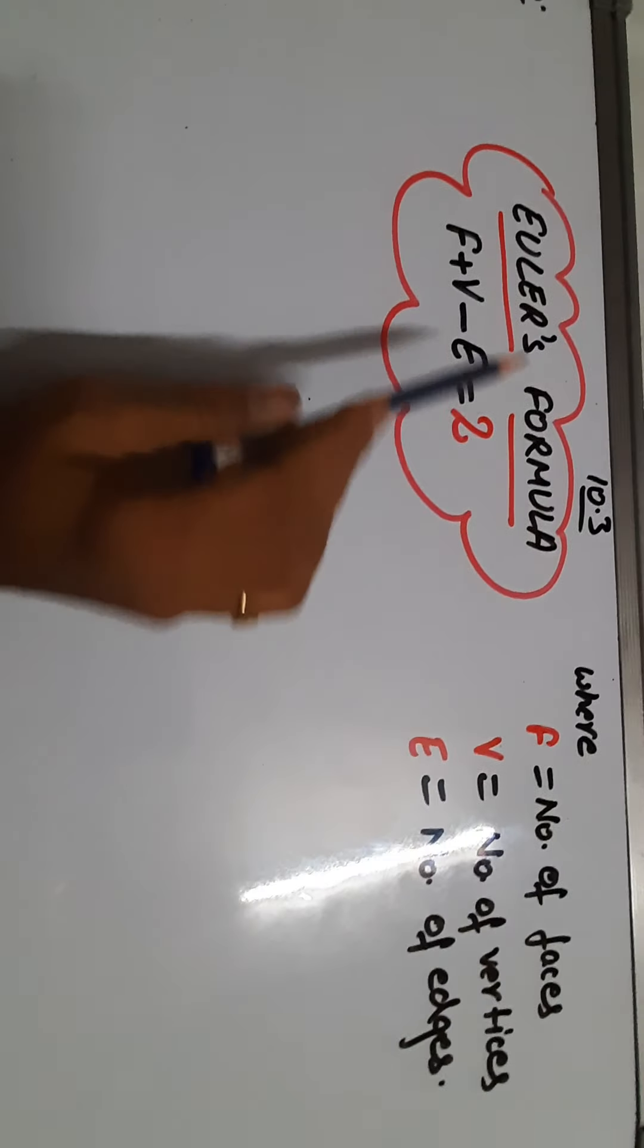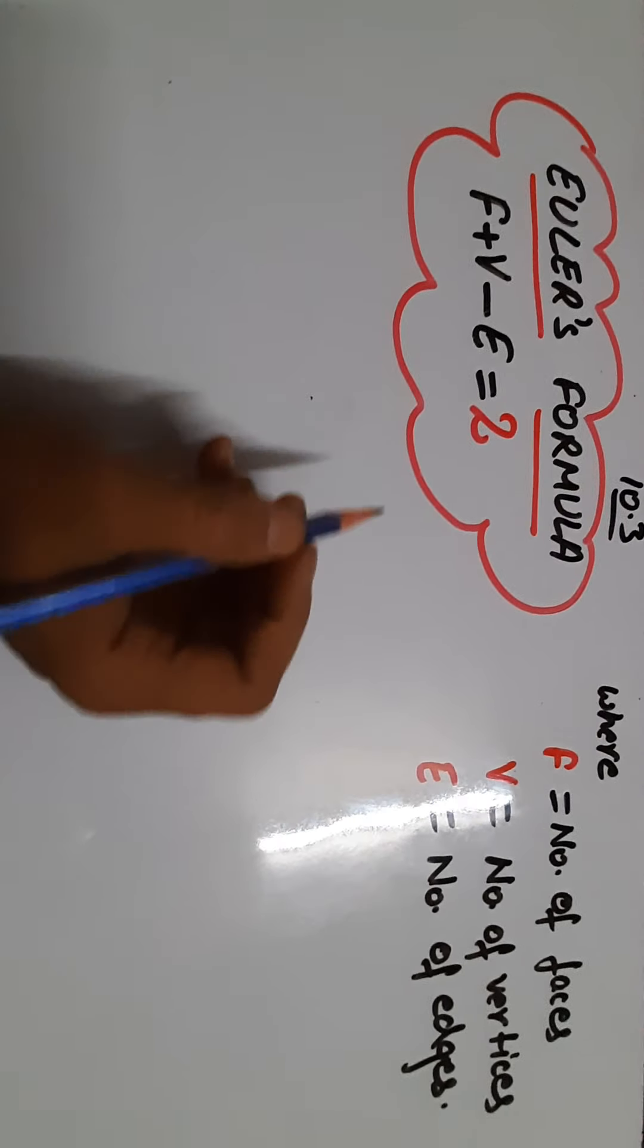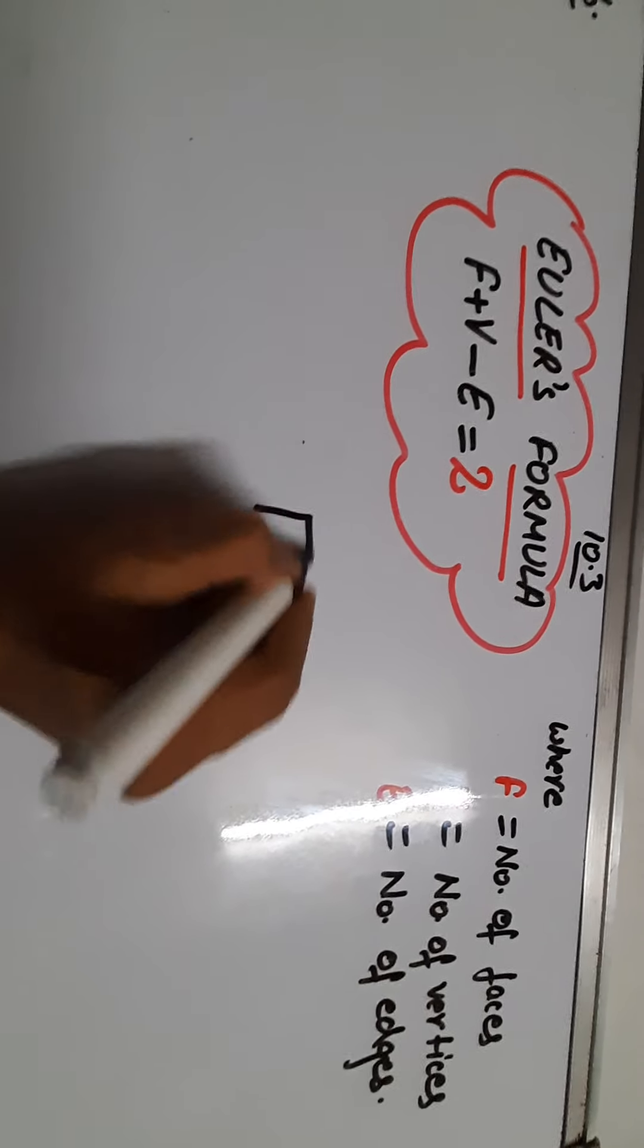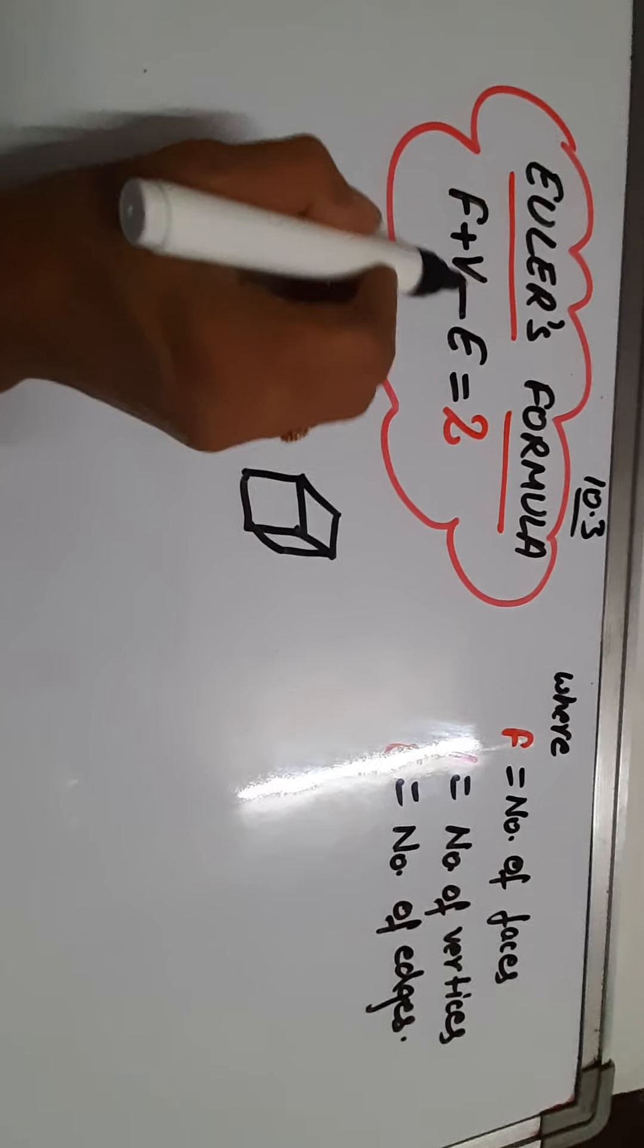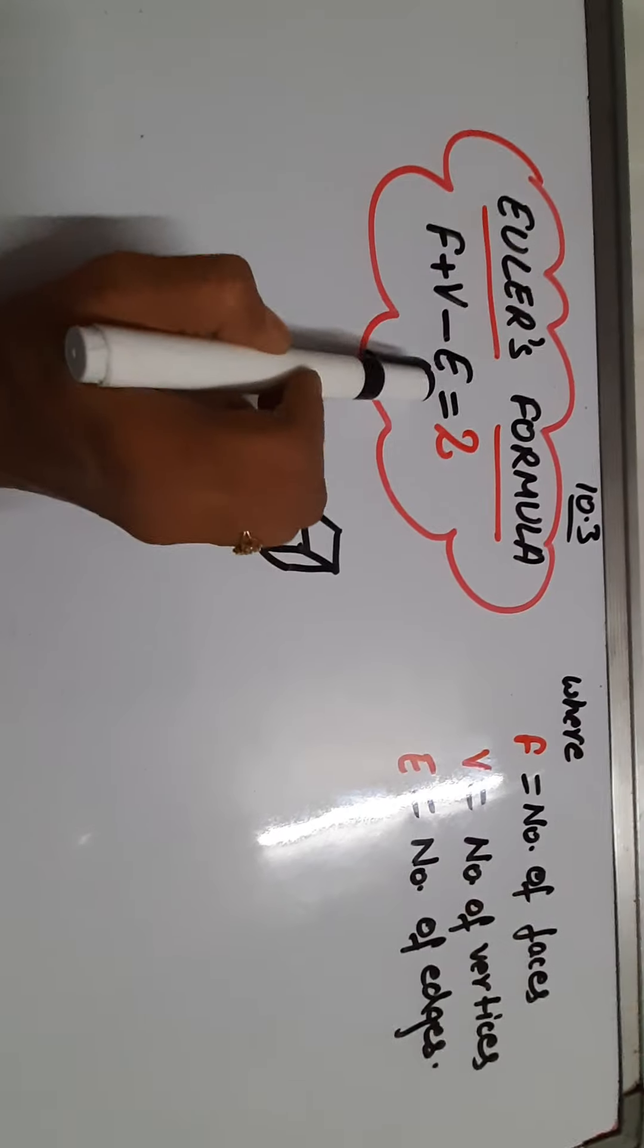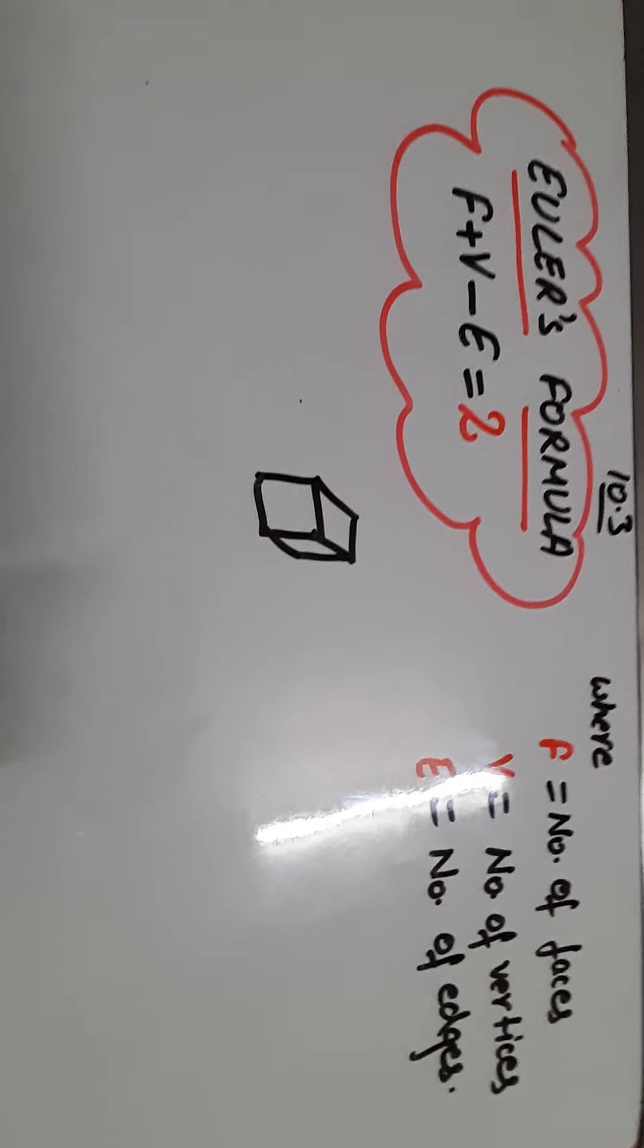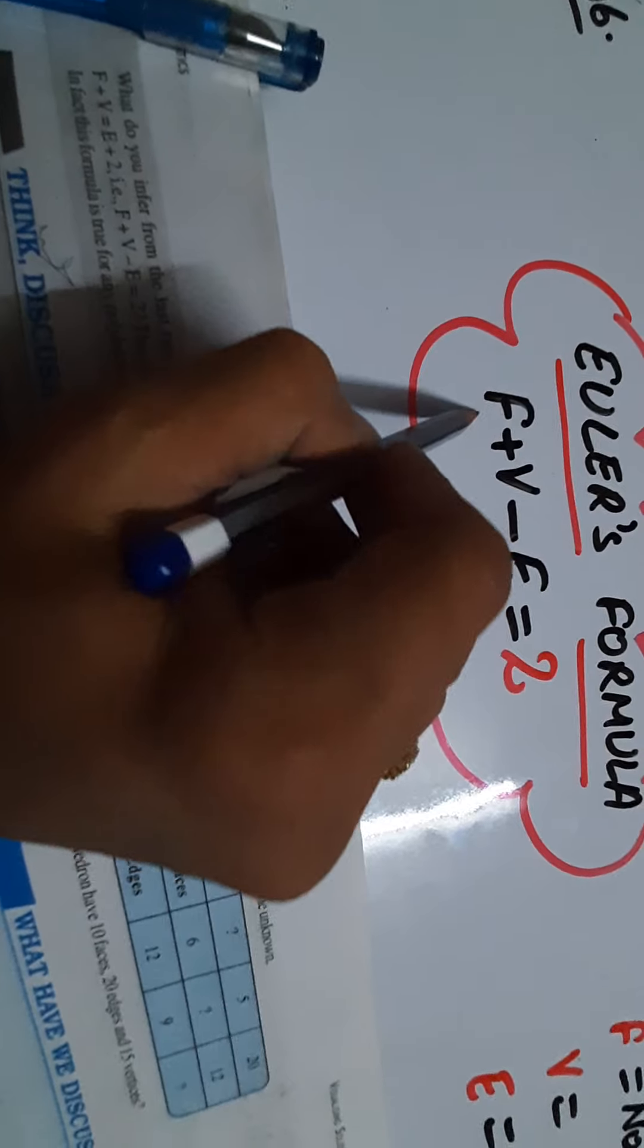So this is our Euler's formula. Note down this formula in your notebook in the form of a cloud. Euler's formula is F plus V minus E equals 2. Edges will be subtracted. We represent the edges by the lines, so you can remember to subtract the edges. Now dear students, verify Euler's formula for these solids. These are polyhedrons. For that we must know how many faces are there, how many vertices, and how many edges.